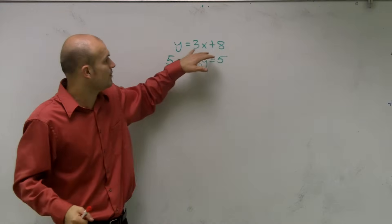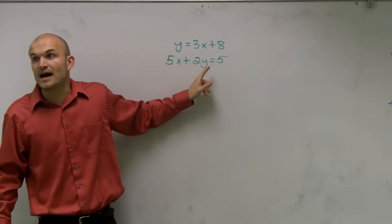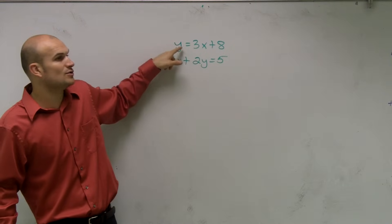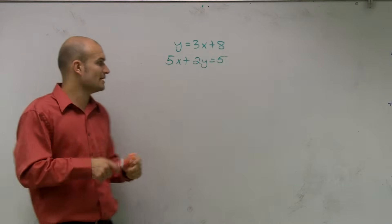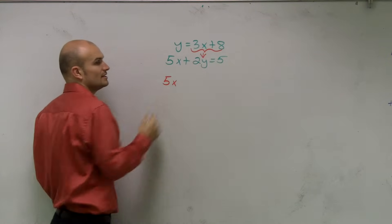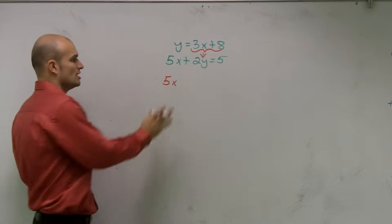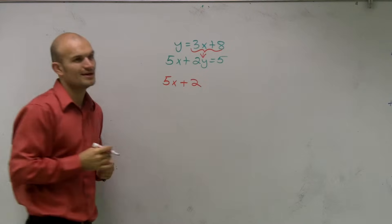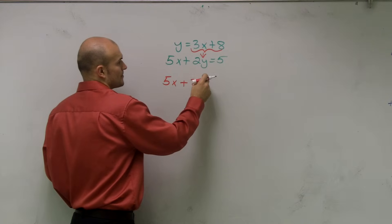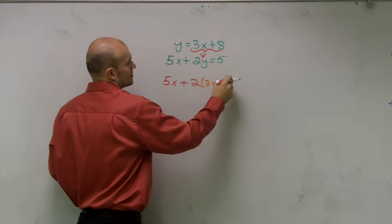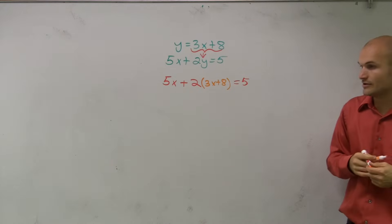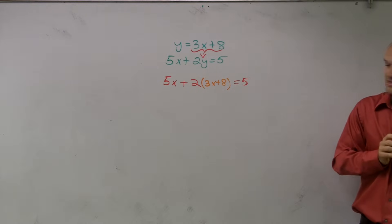And what I'm going to do is, in this second equation rather than using the value of y, I can use that value of y which is 3x plus 8. So I can substitute in the value of y in for my variable in the other equation. So I can say 5x plus 2, and instead of writing 2 times y, which would be that second equation, I can write it times 3x plus 8 equals 5.